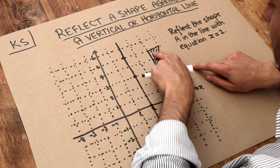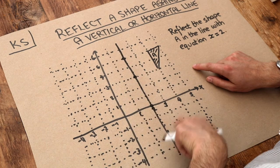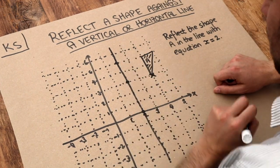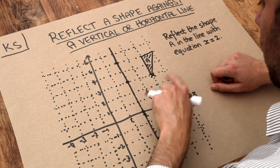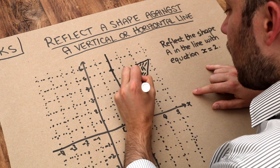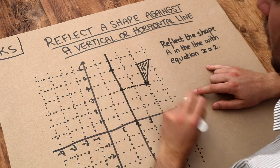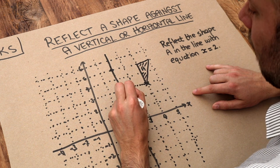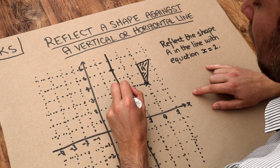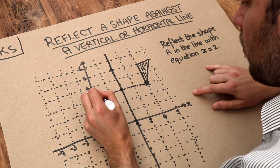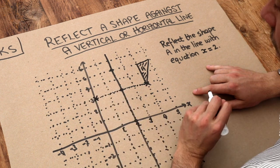And now we can reflect this shape in that reflection line here. So let's do it point by point. Let's choose this point first. All we need to do is we need to go towards, directly towards, the line of reflection like that, and we count the squares. So we can see we've gone 1 square, 2 squares. We're now at the line of reflection, and we do the same distance again in the same direction. So 1 square, 2 squares, and we've ended up here, and I'll put a little cross.